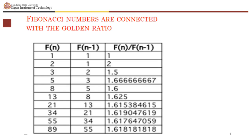Fibonacci numbers are connected with the golden ratio. The golden ratio is the limit of the ratios of successive terms of the Fibonacci sequence, or any Fibonacci-like sequence. In other words, if a Fibonacci number is divided by its immediate predecessor in the sequence, the quotient approximates phi. For example, 89 over 55 equals 1.618181818.